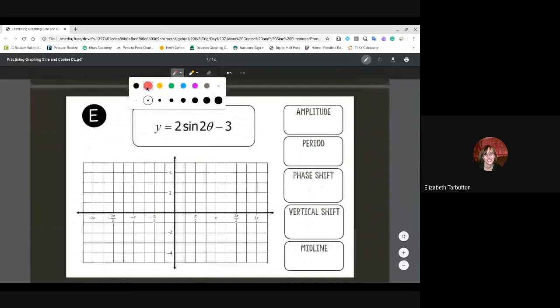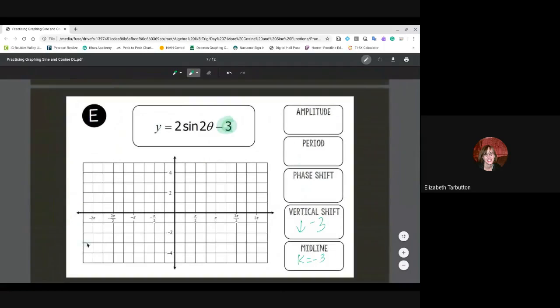Let's do another example here. I usually like to start with that midline—start at the end. My midline here is negative three, so I can do k equals negative three, and my vertical shift is down three. I can get my midline down here at negative three and use that as a bumper.